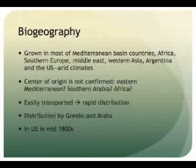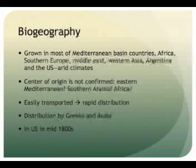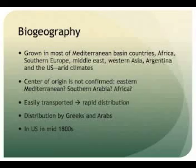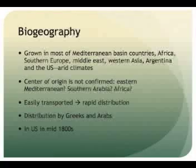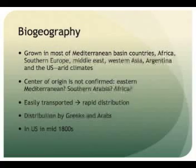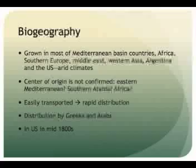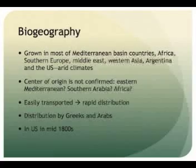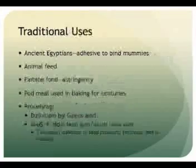Due to the nature of the pod, transportation is relatively easy because the pods can be stored for long periods of time. Because of this, distributing the species to areas of the world was made easy. The spread of carob was due primarily to the Greeks and Arabs. The Greeks brought it to Greece and Italy, and the Arabs spread it through northern Africa, Spain, Portugal, and France. It was brought to California and Arizona in the mid-1800s.